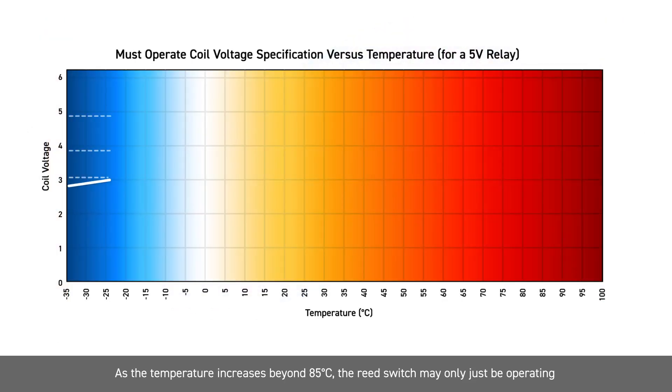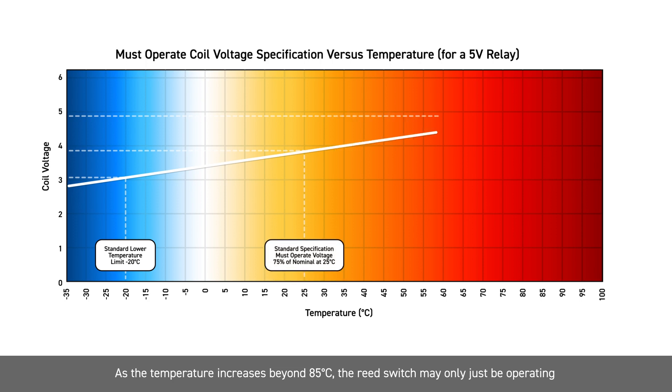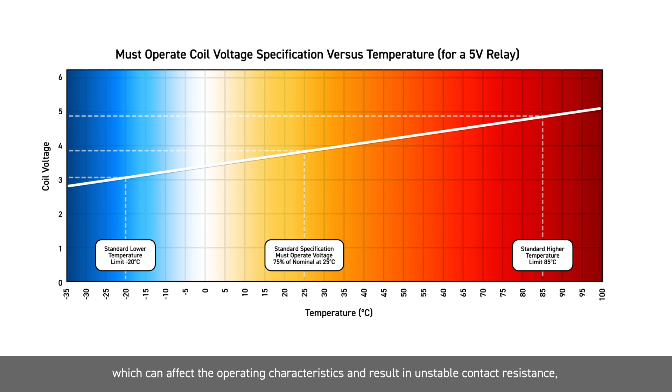As the temperature increases beyond 85 degrees Celsius, the reed switch may only just be operating, which can affect the operating characteristics and result in unstable contact resistance. As the temperature continues to increase, the relay will not operate.